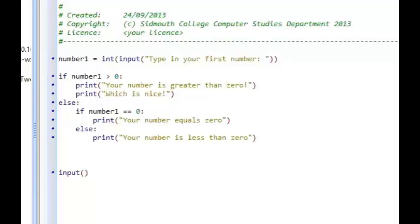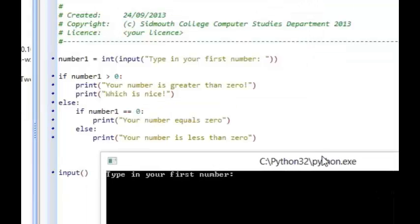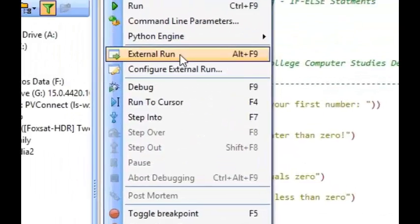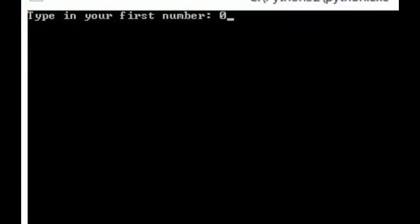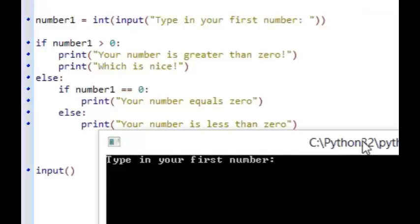So let's see if this program works. Let's run the program. So we're typing in a number. Let's say 3. Your number is greater than zero, which is nice. Both of those have been displayed. Let's try again. This time let's put in a zero. Your number equals zero. That's good. And run again. If I type in a number less than zero, for example minus 2, it says the number is less than zero, which is perfect.